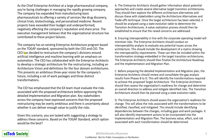The existing EA program was sponsored by the CEO and CIO. The CEO has decided to restructure the company's divisions around artificial intelligence and machine learning with an emphasis on automation. The CEO has collaborated with the enterprise architects to develop a strategic architecture for the restructuring, including an architecture vision and definitions for the four domain architectures.